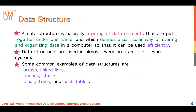What does it mean by data structure? When I try to explain something, I explain what, why, and how. So, what is a data structure? A data structure is a group of data elements that are put together under one name. For example, a student record groups elements like name, family name, ID, faculty name, and department name into one structure called student information. It defines a particular way of storing and organizing data in a computer so that it can be used efficiently.